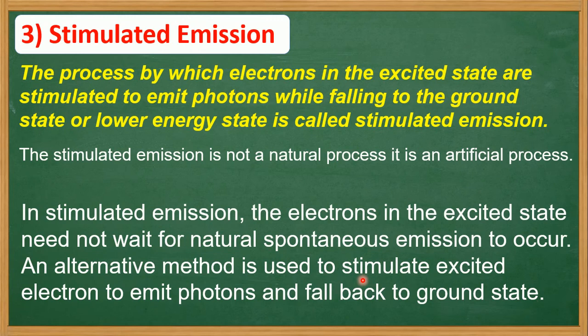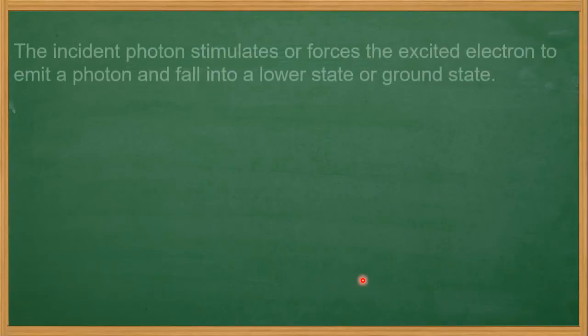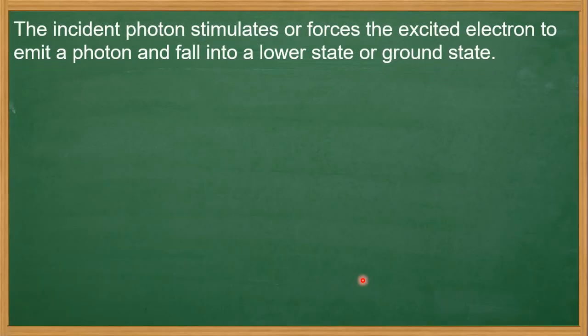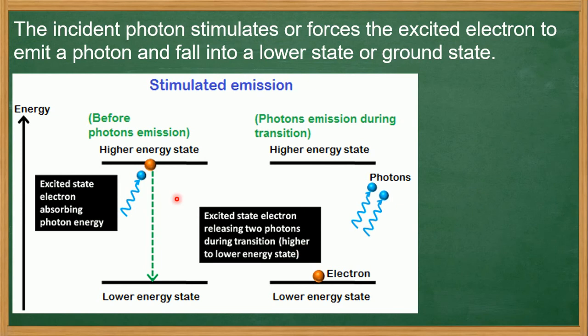The electrons in the excited state are stimulated to fall back to the ground state. An incident photon stimulates or forces the excited electron to emit a photon and fall back into a lower energy state or ground state.